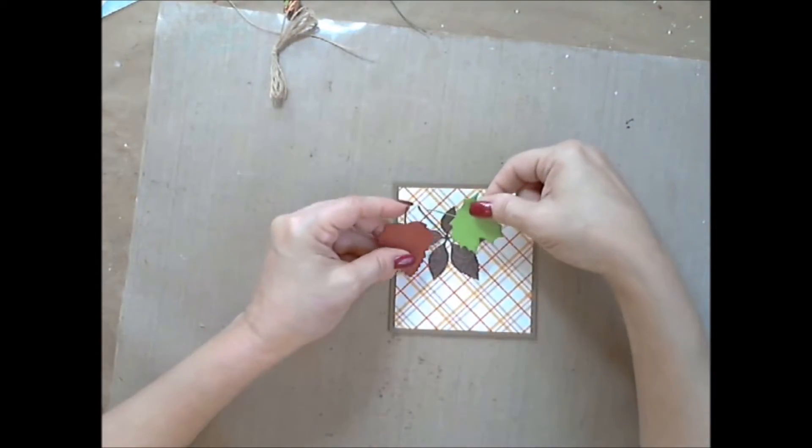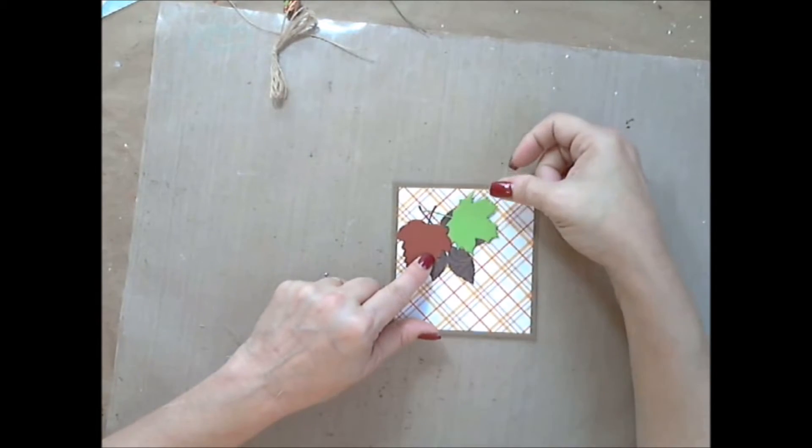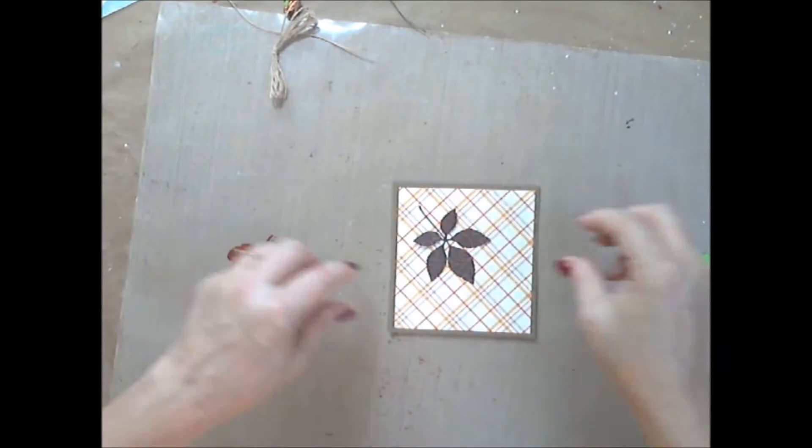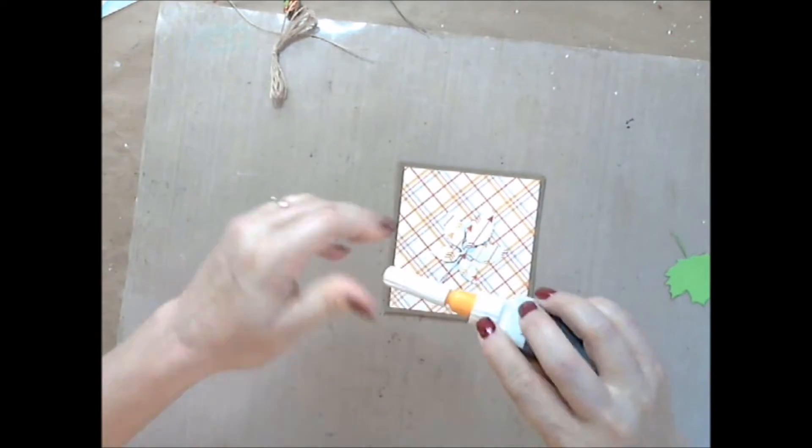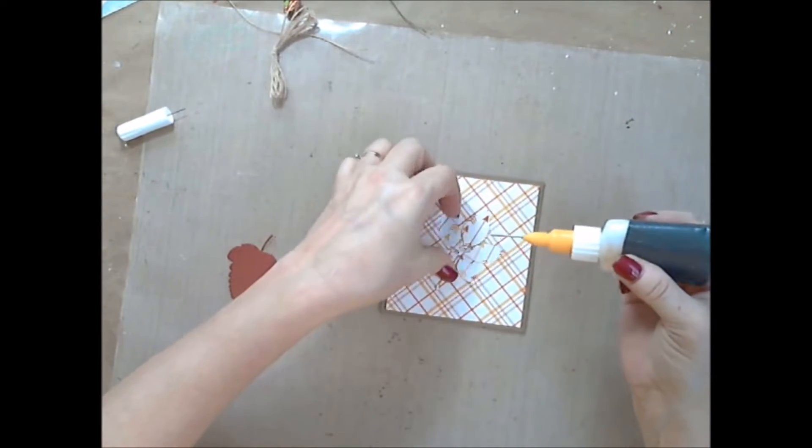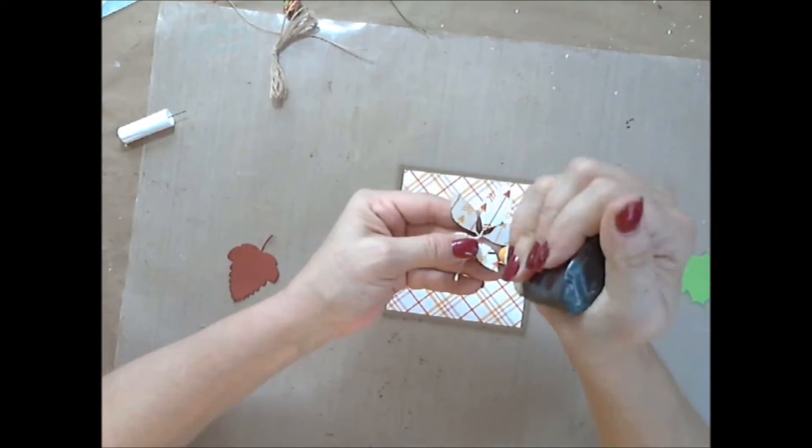Here I'm taking the Bow Bunny Oh So Lovely die that came in the kit from the Boutique and I cut out one of each of the three different leaves. Now I'm adhering those down.